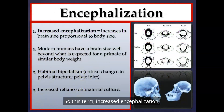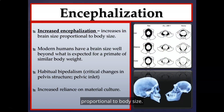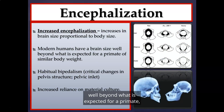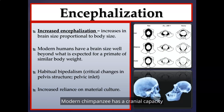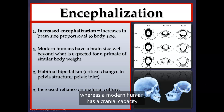Encephalization refers to an increase in brain size proportional to body size. Modern humans have a brain size well beyond what is expected for a primate of similar body weight. For example, a modern chimpanzee has a cranial capacity of around 300 to 350 cc, whereas a modern human has a cranial capacity five times that — somewhere between 1,200 to 1,700 cc.